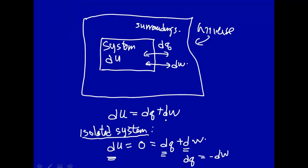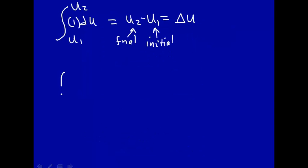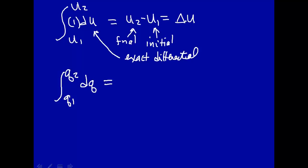I integrate the right hand side of the differential form of the first law of thermodynamics. So let's integrate from Q1 to Q2 of dQ. Now, this is going to be a problem. This you can do because U is an exact differential. So we could get a delta U here.